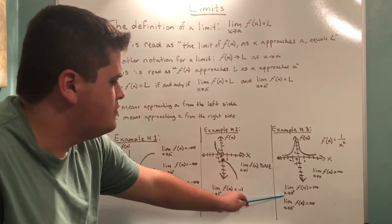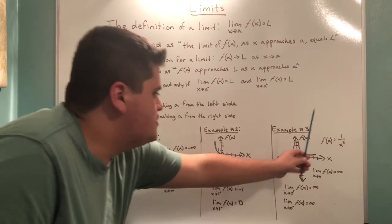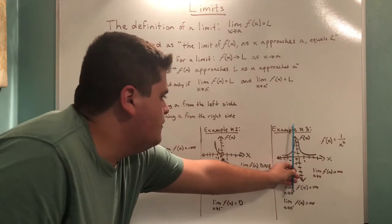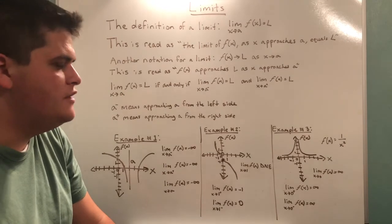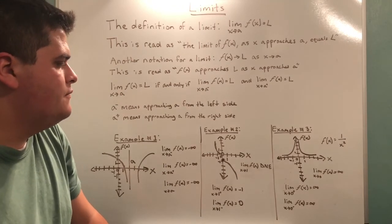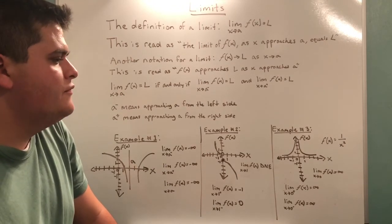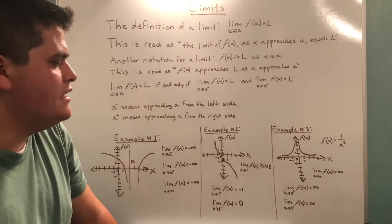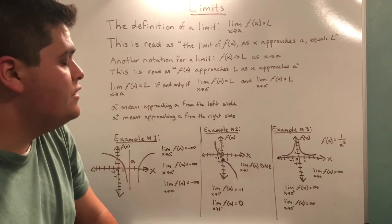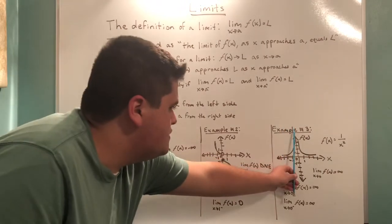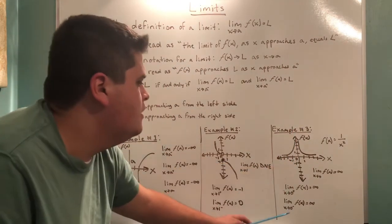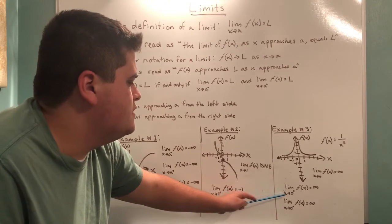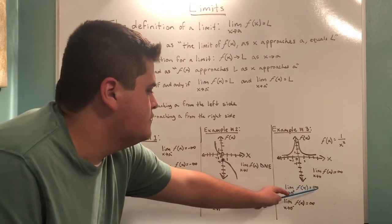So the limit as x approaches 0 from the right, we start from the right, work our way here. However, we cannot approach division of 0 equal to 0. So 1 divided by 0 is not equal to 0. We actually get an asymptote at 0 because it can never be divided by 0. So the limit as x approaches 0 from the right of f(x) is equal to infinity.